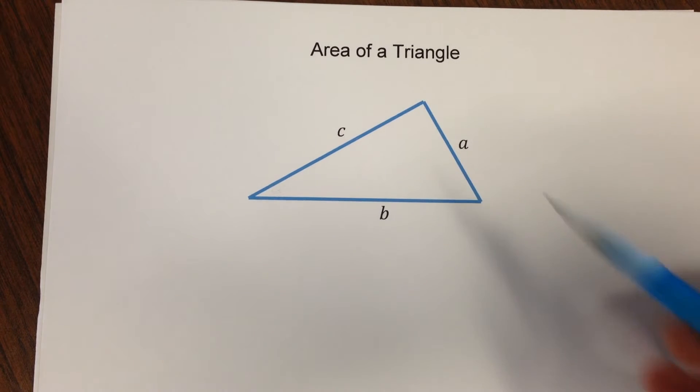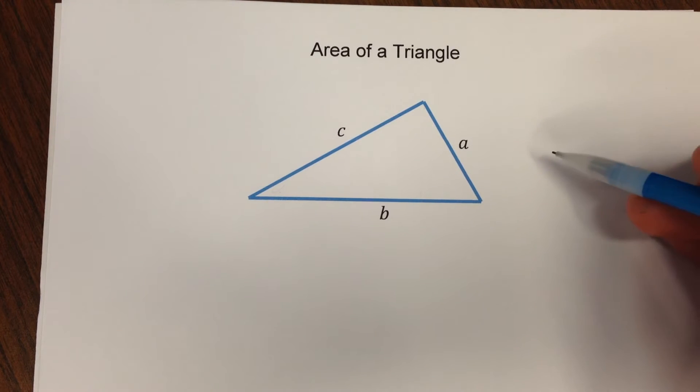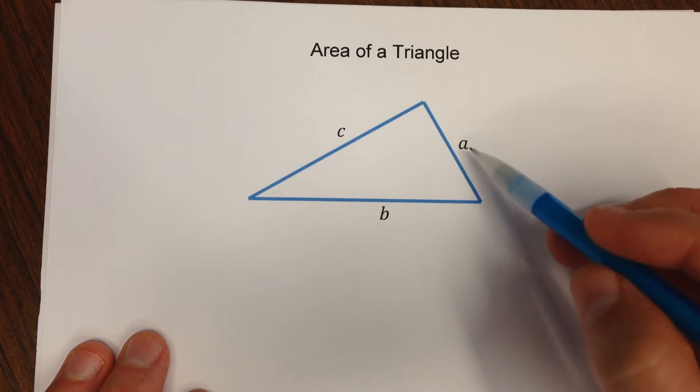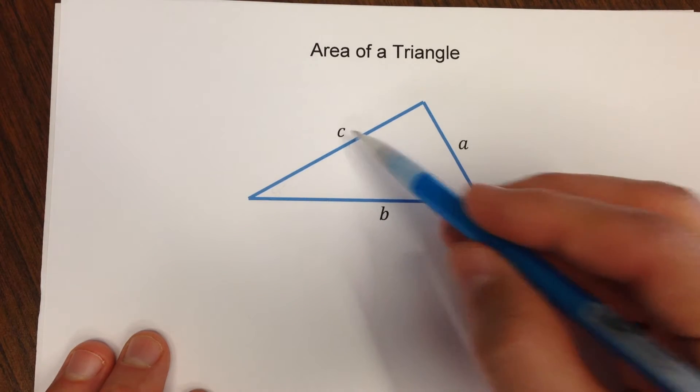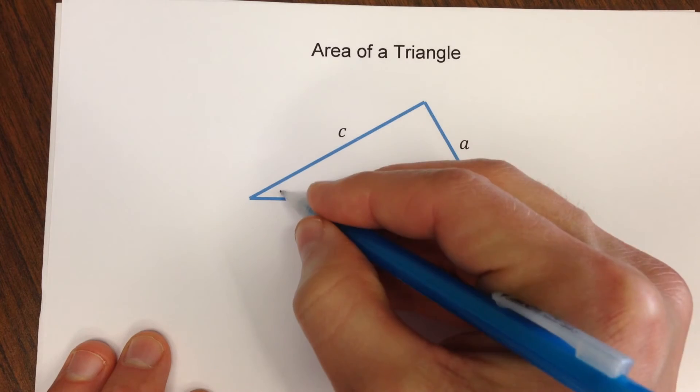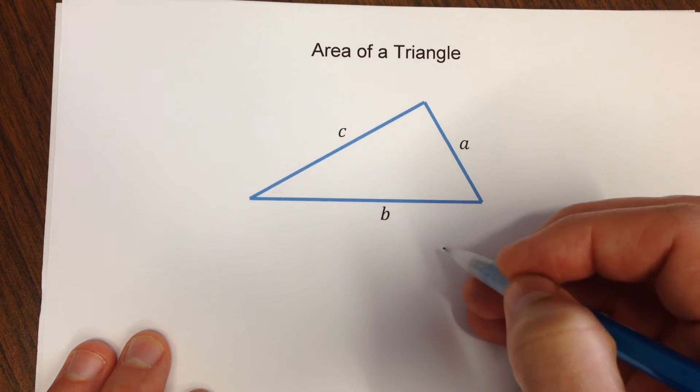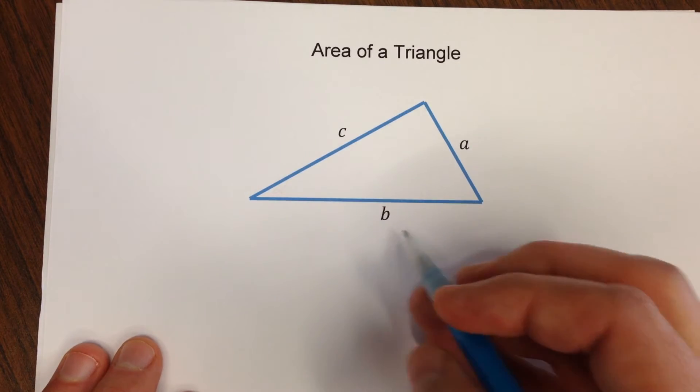Let's discuss a couple of different ways to find the area of a triangle. So if you have side lengths A, C, and B, how are you going to go about finding the area of the triangle?